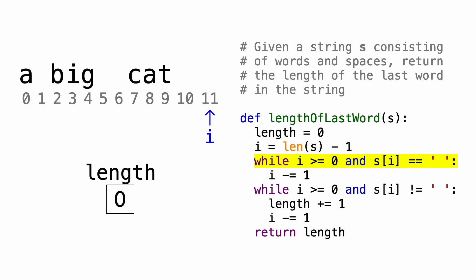Then we'll enter a loop that'll traverse backwards in the string until we hit the last word. So we'll check for two things. First, we want to make sure that we haven't gone out of bounds, so we'll make sure i is greater than or equal to 0. Next, we'll check if the character at index i is a space character.